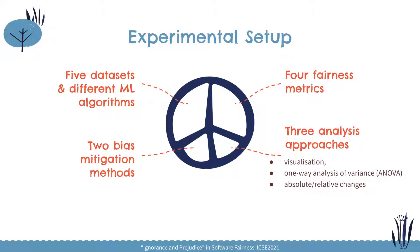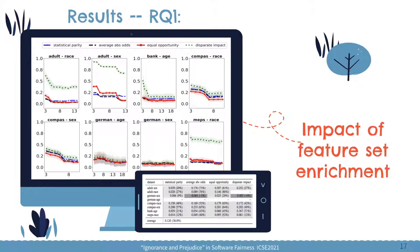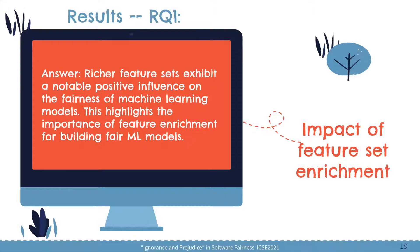These figures realize the impact of feature set enrichment on fairness. Different lines represent different fairness metrics, and the smaller the values of these metrics are, the better the fairness is. It's easily observed that when the feature set is enriched with more features, almost all the lines drop, indicating that fairness gets improved. Almost all the changes are statistically significant, and the average fairness change rate is as high as 38%. Based on this, we get the answer to the first research question: richer feature sets have a notable positive influence on the fairness of machine learning models.